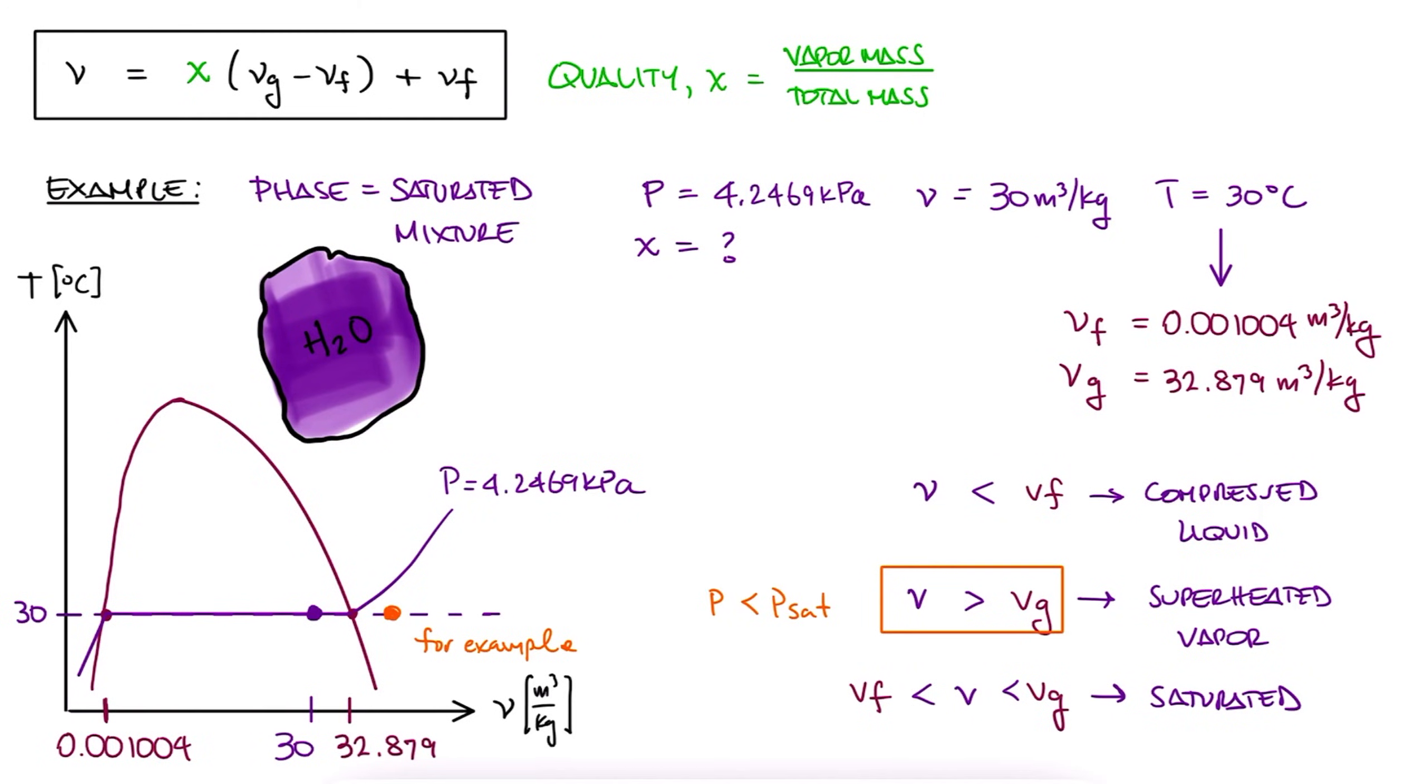If our current specific volume was greater than Vg, the pressure would be lower than Psat, and we would be located on the line that represents that pressure. And if our current specific volume was less than Vf, the pressure would be higher than Psat, and we would be located on the line that represents that pressure. We would use the superheated vapor and the compressed liquid tables, respectively. But since our specific volume is between Vf and Vg, we have a saturated liquid vapor, and therefore the pressure is the saturation pressure.